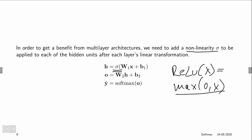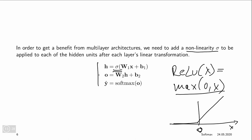The ReLU zeroes out negative components, so the function looks like zero for negative x, then increases linearly for positive x. This non-linearity already is enough to make the whole network non-linear, so the class probabilities no longer depend linearly on the features.